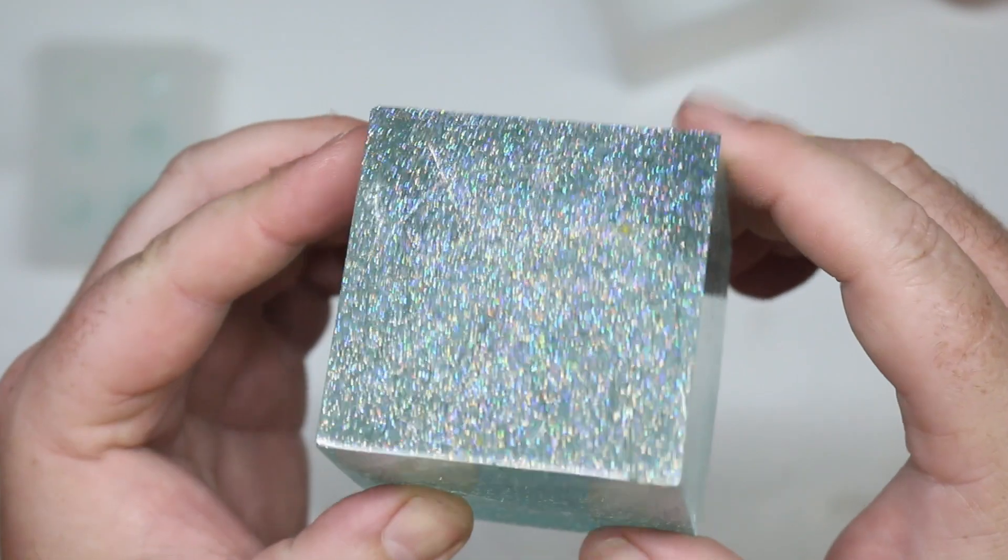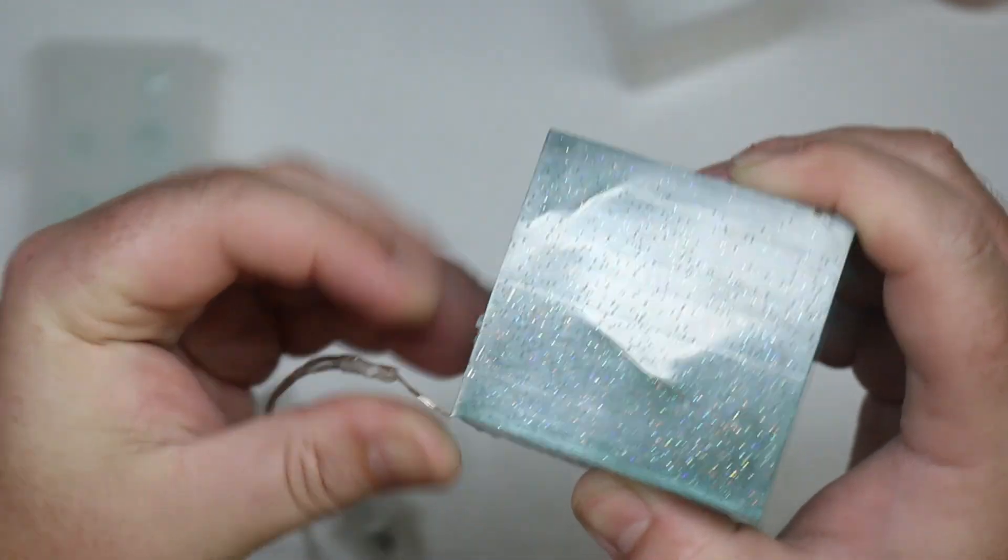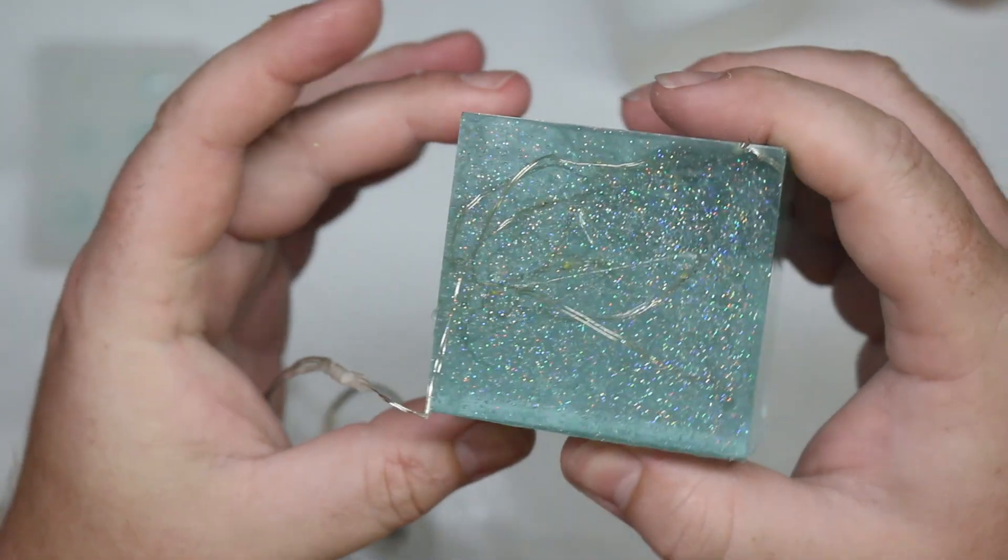That looks really cool. You can see here where the wire come out at the top. You can just bend that over now so it's nice and flat. That way it'll sit really good on the table.